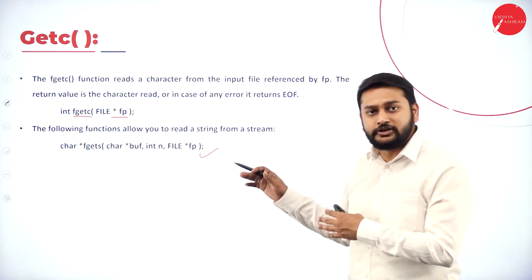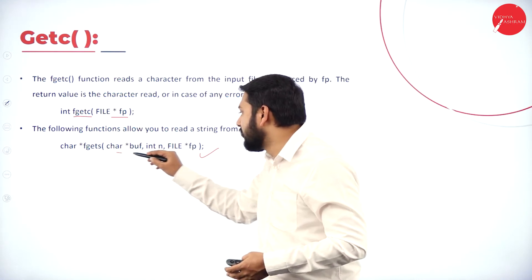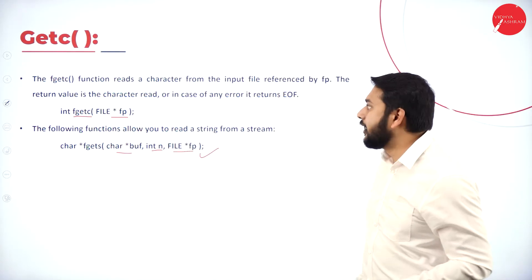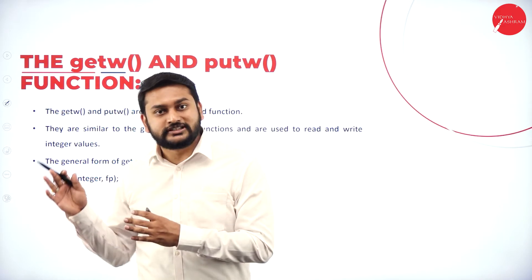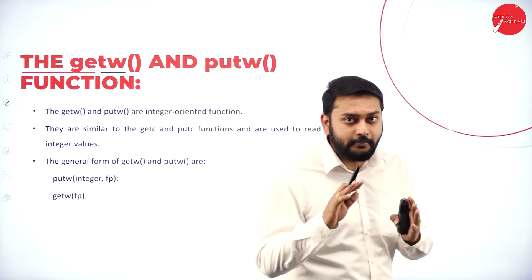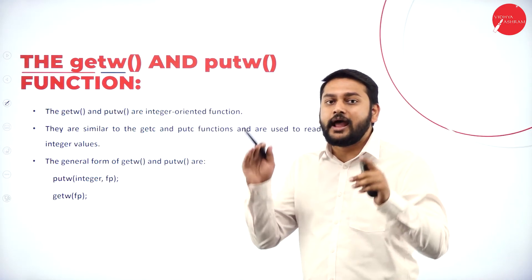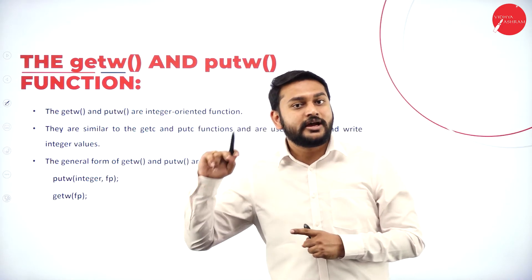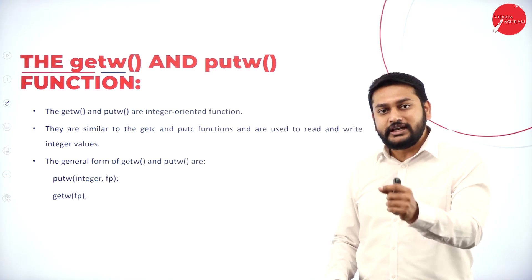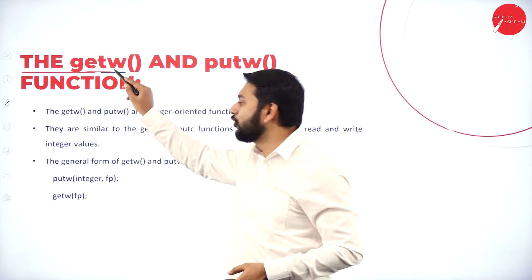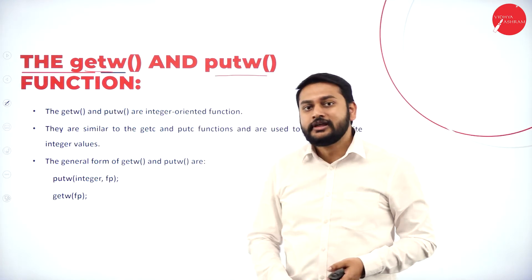There is also fgets, which helps me to read a string — it takes a character buffer, an integer, and a file pointer. Moving on, there is a one-letter difference between fgetc/fputc and getw/putw. With 'w', I am dealing with integers rather than characters. If you want to read an integer, use getw; to write an integer, use putw.